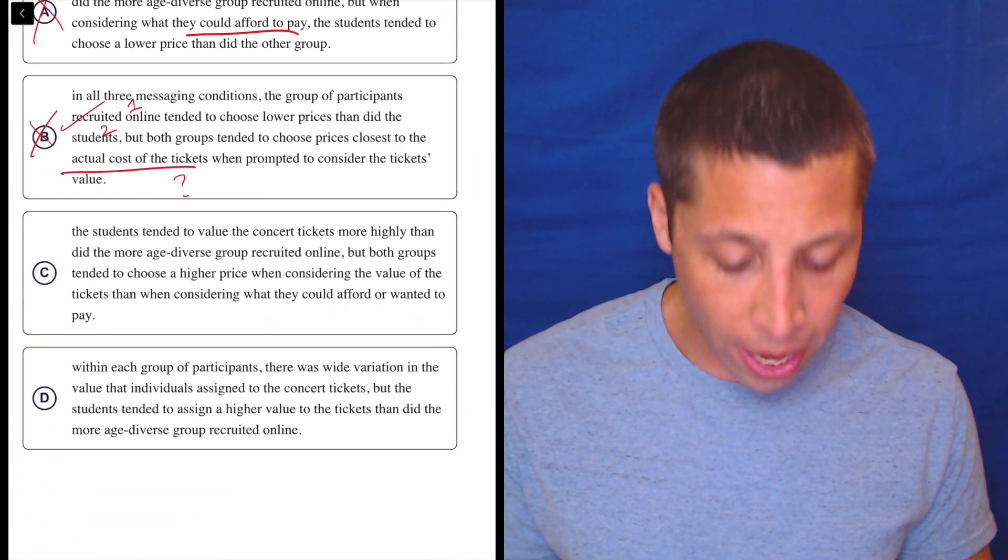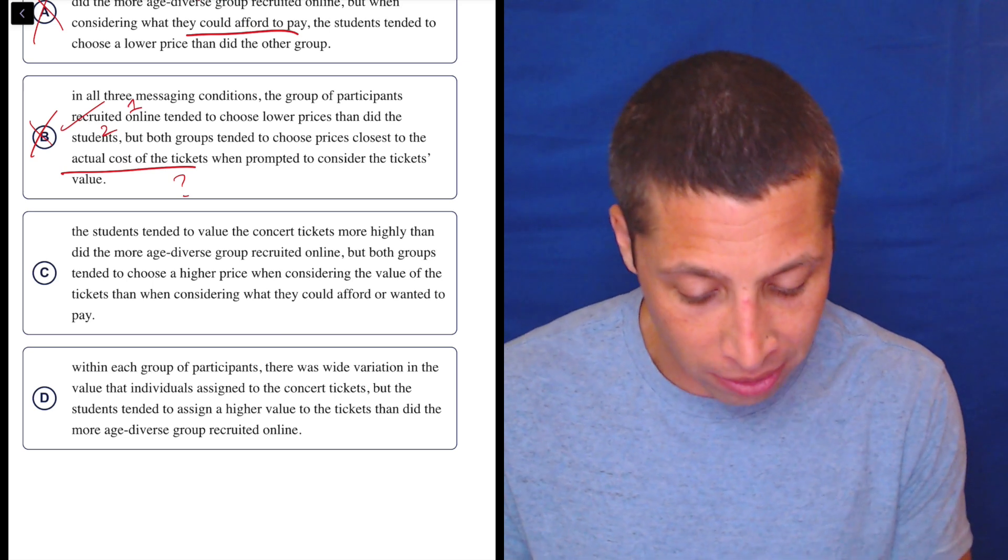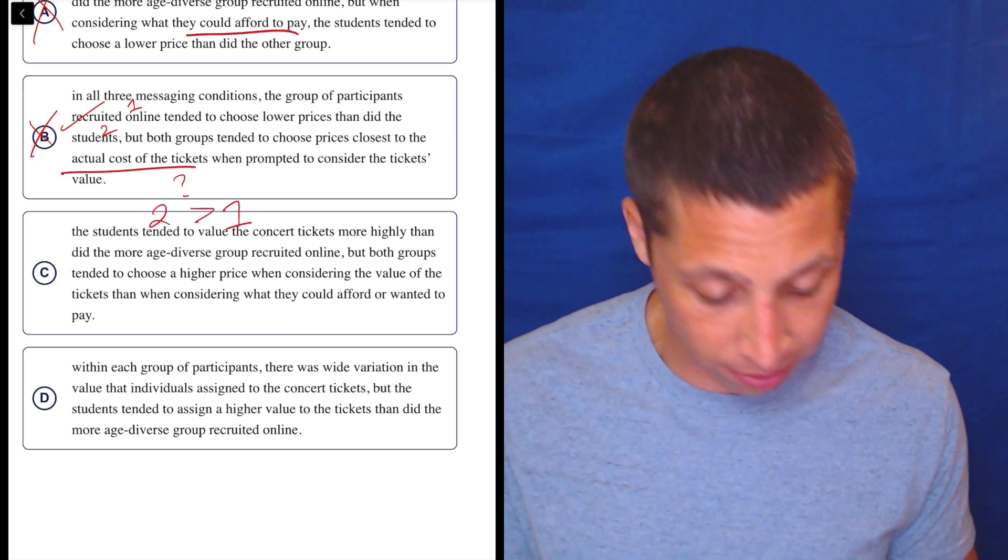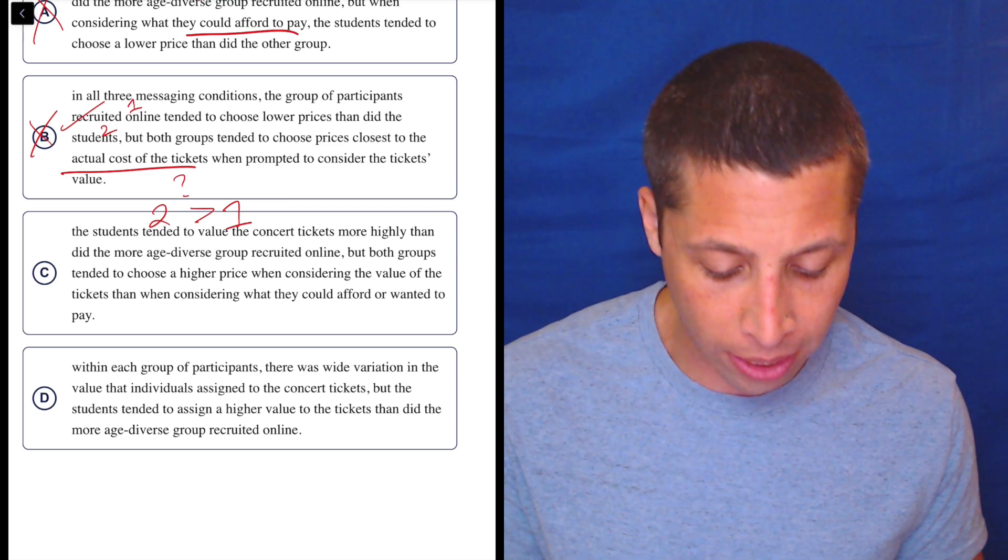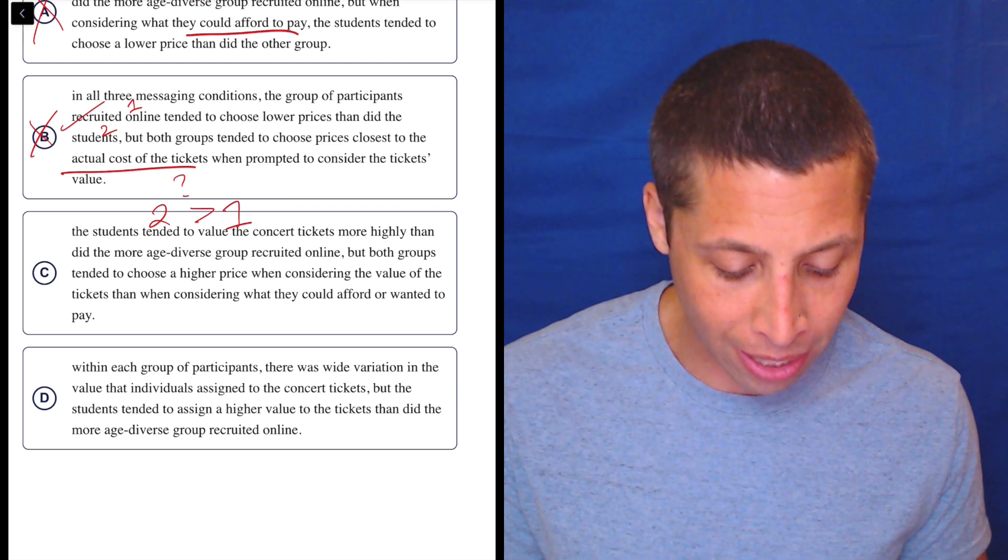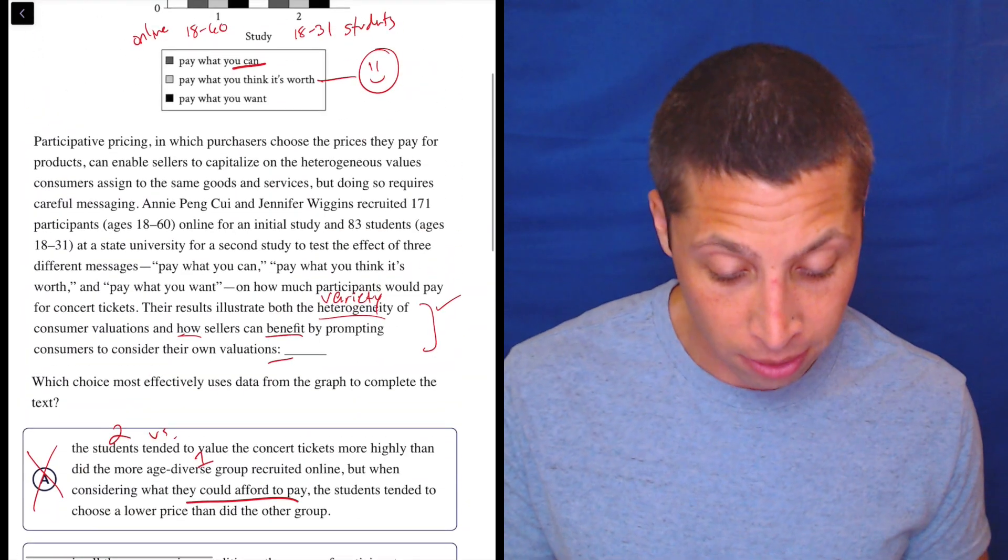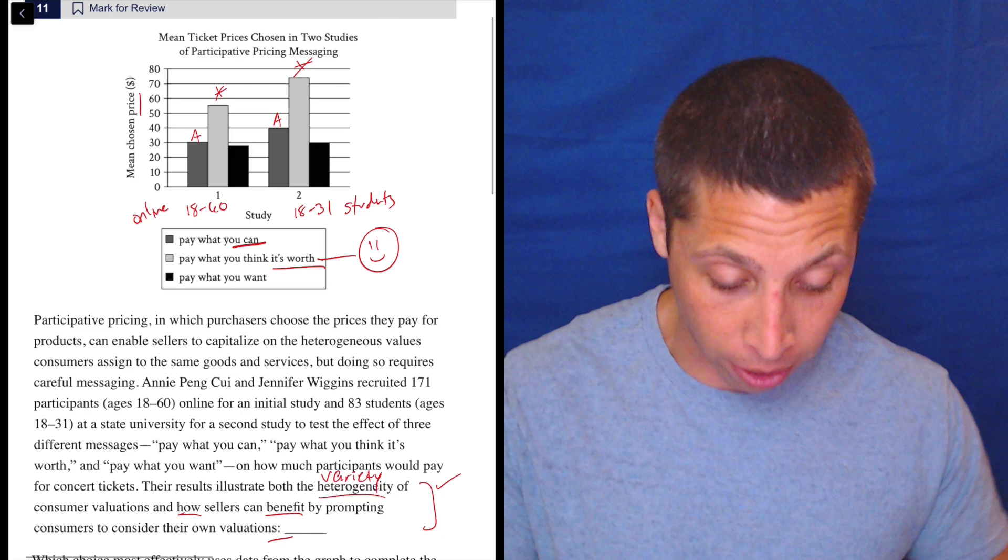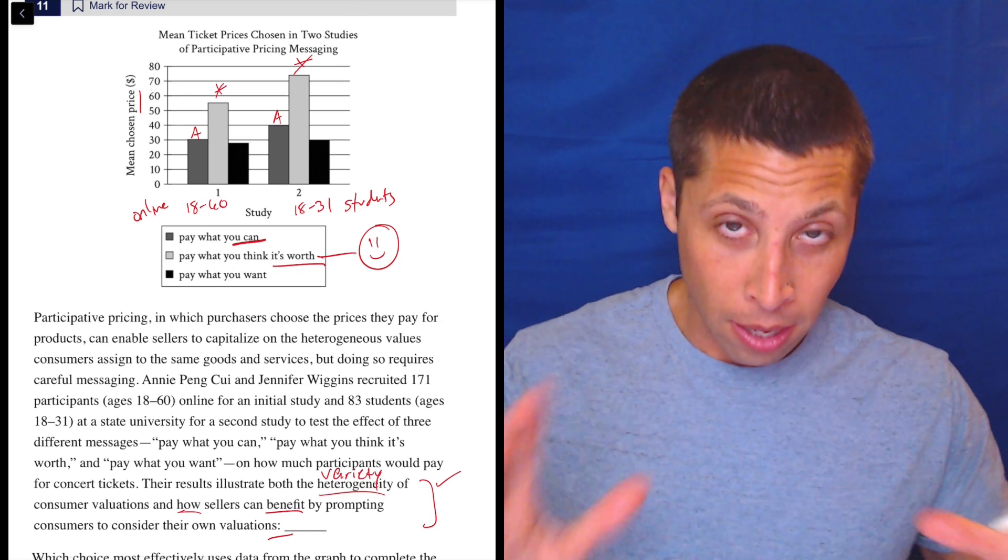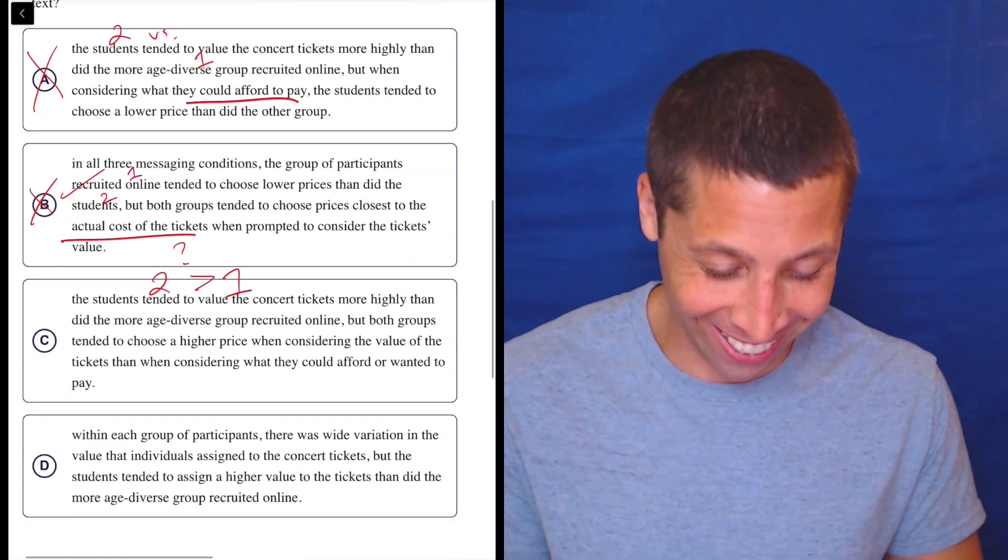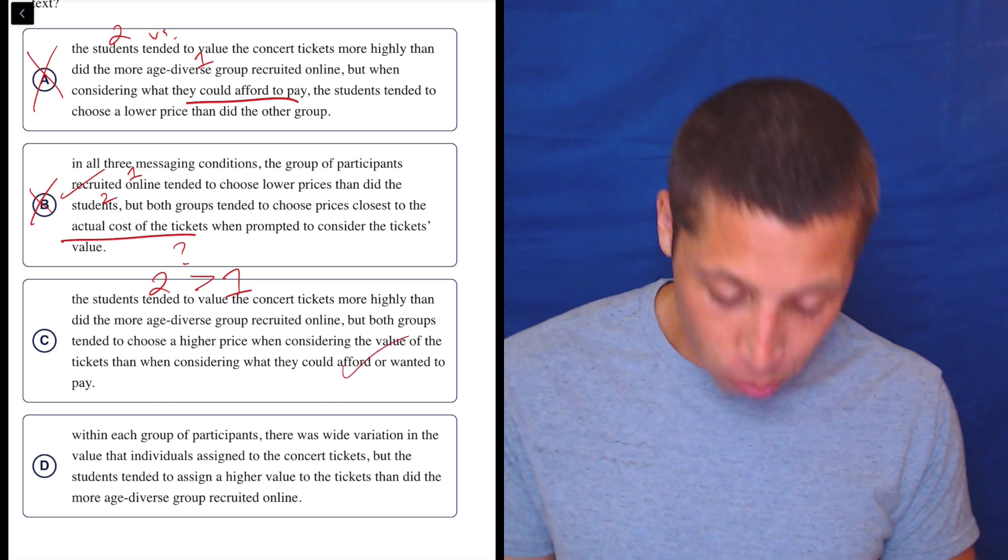The students tended to value the concert tickets more highly than did the more age-diverse group online. So, that's true. This is basically saying two is greater than one. That's true. But both groups tended to choose a higher price when considering the value of the tickets than when considering what they could afford or wanted to pay. Well, the value of the tickets, pay what you think it's worth, that is higher. And that does seem to be true. That's the middle piece. Seems good. Obviously, I'm not going to pick it because I still am enough confused, but that seems right.